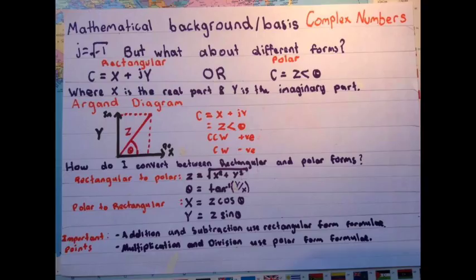This is the mathematical background/basis of complex numbers. There are two forms in which this occurs: rectangular or polar.